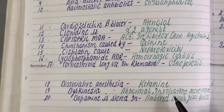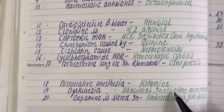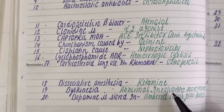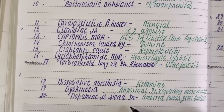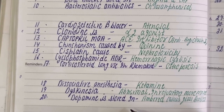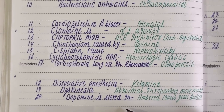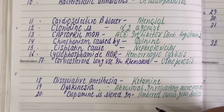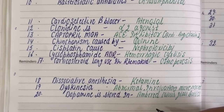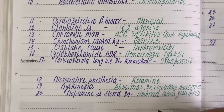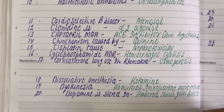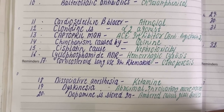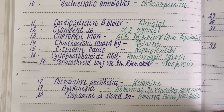The next question is dyskinesia, which means abnormal or involuntary movement of the body. Question 20: dopamine is stored in an amber color bottle — the correct option is amber color bottle.